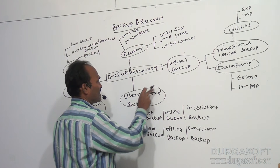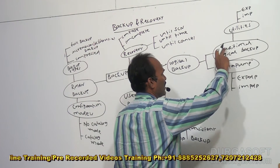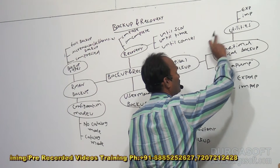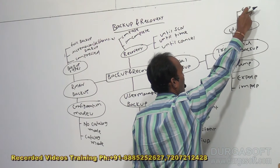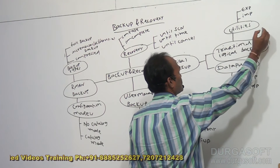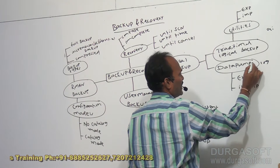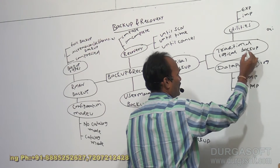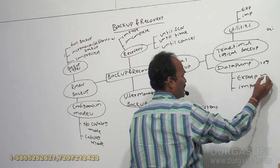Another category is logical backup. Under the logical category, we have traditional backup as the first category. For using logical backup, we are going to use two tools: EXP for exporting and IMP for importing the data. This is available up to 9i version. From 10G version onwards, the data pump utility was introduced. Under data pump, we can perform the same logical backup using two different tools.